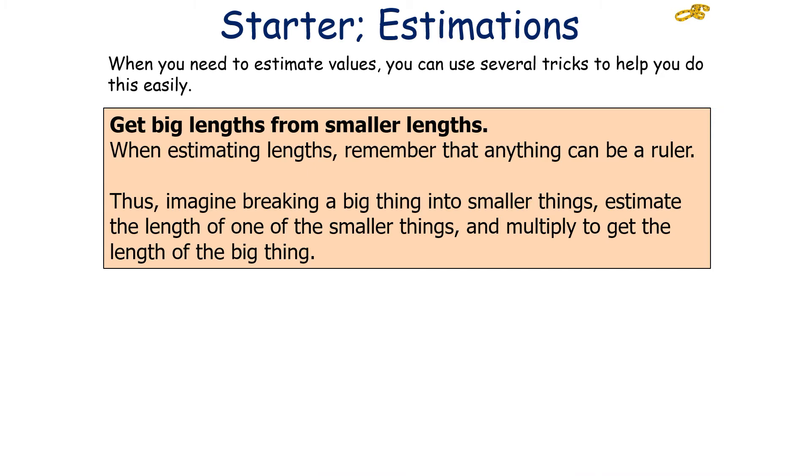When you need to estimate values, you can use several tricks to help you do this. The first trick you can do is to get big lengths from smaller lengths. When estimating lengths, remember anything can be used as a ruler. If you're struggling to estimate something, imagine breaking a big thing into many smaller things, estimate the length of one of the smaller things, and then multiply to get the length of the big thing. For example, if you're trying to estimate the height of a building, think about how many floors are in the building, and then think about how many humans could fit vertically on a floor. You know the height of a human, you can then use that to estimate the height of a building.